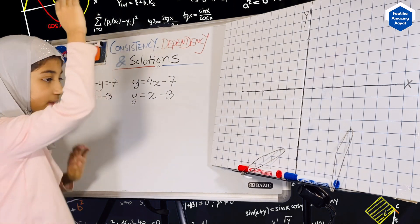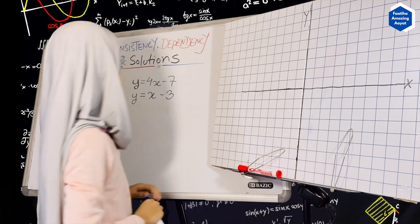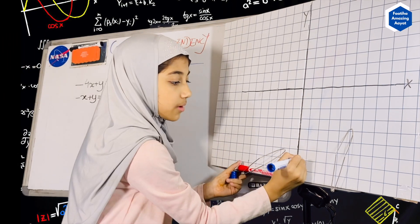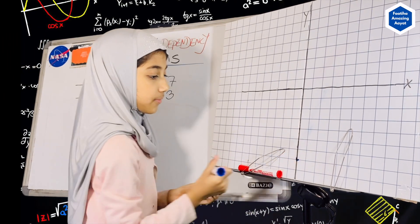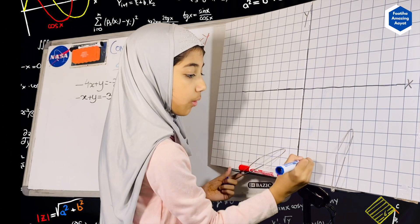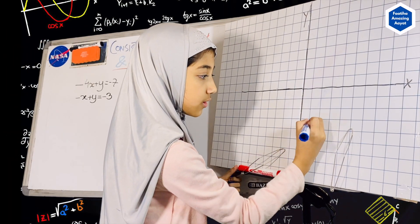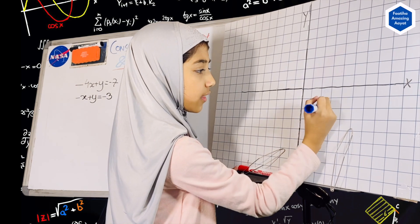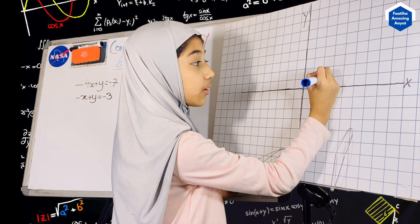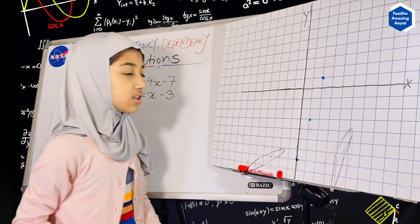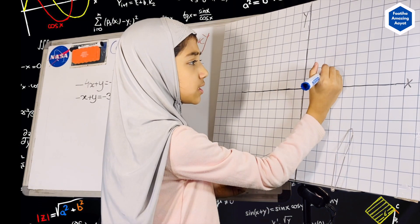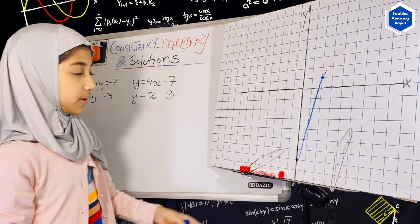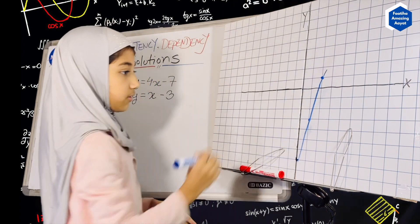Let's do the graph. Our first equation: the Y-intercept is minus 7, when X is 0, so that point is right here. And our slope is 4, so that means we go 1 right and 4 up. So the line would look something like this.